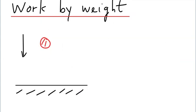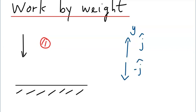Let's look at an example where work done by gravitational force, or weight, acts on an object that is moving downwards — it's falling downward, so its direction of motion is downward. Let's assume that the positive y-axis is heading upward, so the direction of the positive y-axis is j-hat, and the direction along the negative y-axis is minus j-hat. This object is being pulled downward by its own weight, mg — that is the gravitational force acting on this object.